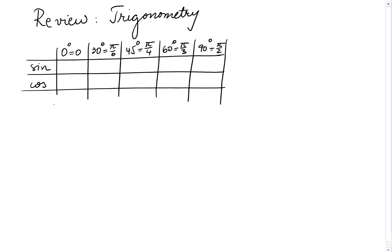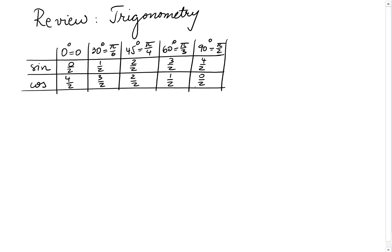An easy way to remember it — and of course there is a mathematical explanation for these values — put everything over 2 and then start counting 0, 1, 2, 3, 4, and now count back 4, 3, 2, 1, 0, and then put everything under the root. Just the numerators — each numerator we put it under the root.